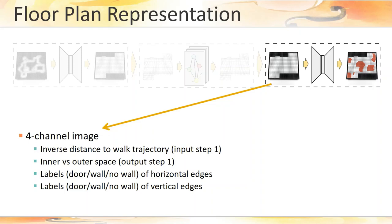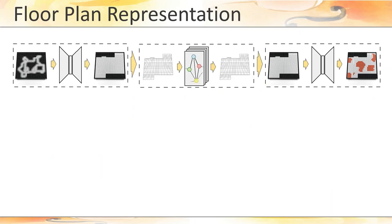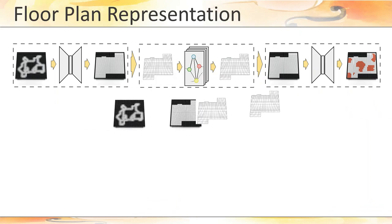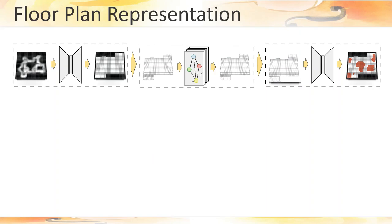The third and fourth channels contain a labeling of the horizontal and vertical edges of the grid, where each label denotes whether an edge lies on a door, on a plain wall section, or does not correspond to a wall at all. The network output is a binary image that encodes whether the locations corresponding to the pixels are occupied by furniture or not. Note that the information provided as input to a network is built either from the input work trajectory or from the output of a previous network, allowing for a cascaded application of the networks at inference time.